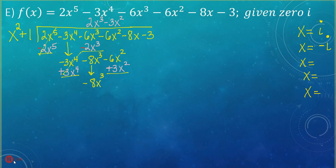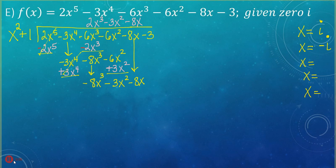Combine like terms — that gives you negative 3x². I'm going to bring down the negative 8x. Dividing negative 8x³ by x² gives us negative 8x. Multiply negative 8x times (x² + 1): that gives us negative 8x³ and negative 8x. Change our signs and drop that down.